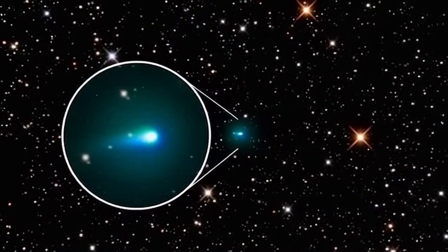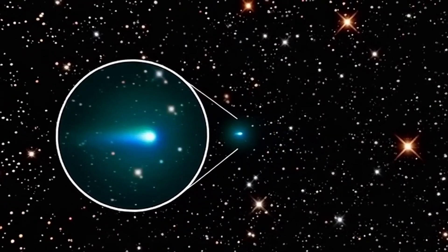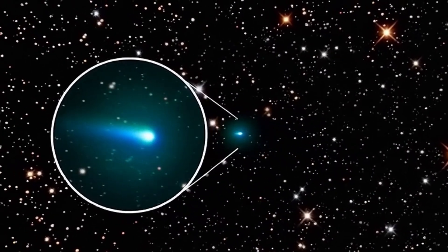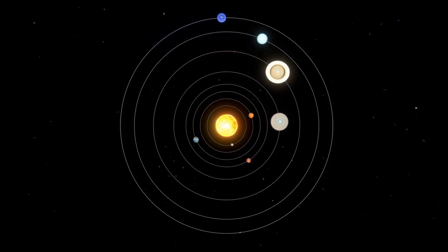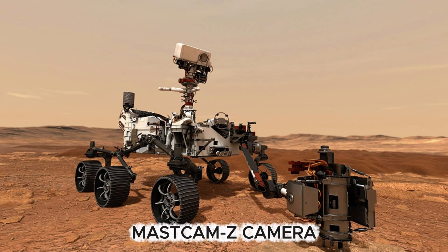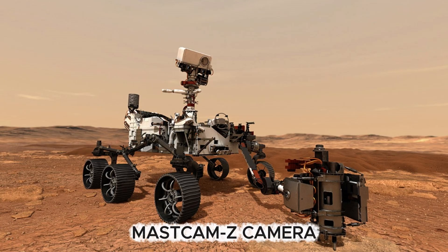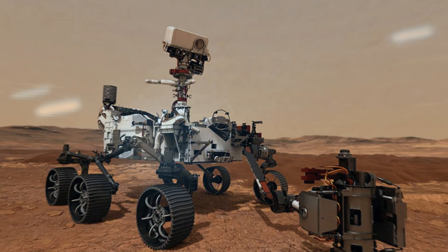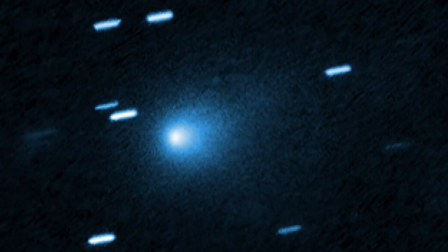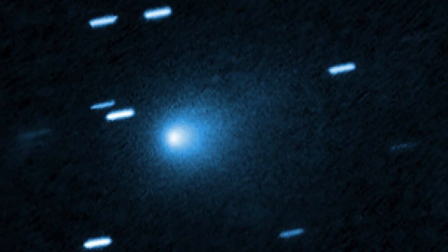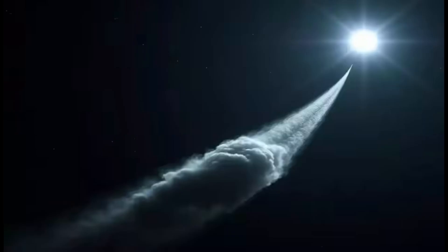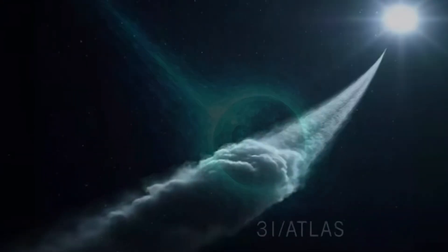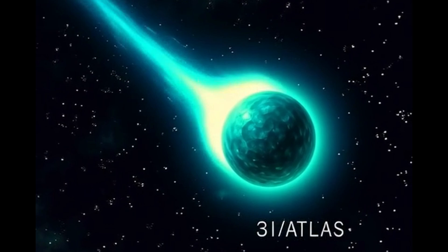A newly released image of the interstellar object 3i Atlas has left scientists astonished, revealing behavior in sunlight unlike anything ever recorded before. The image, captured by the Mastcam-Z camera aboard NASA's Perseverance rover on Mars, shows a faint, blurry glow in the Martian sky, precisely where astronomers predicted the mysterious visitor would appear. This marks the first time 3i Atlas has been observed from such close range.